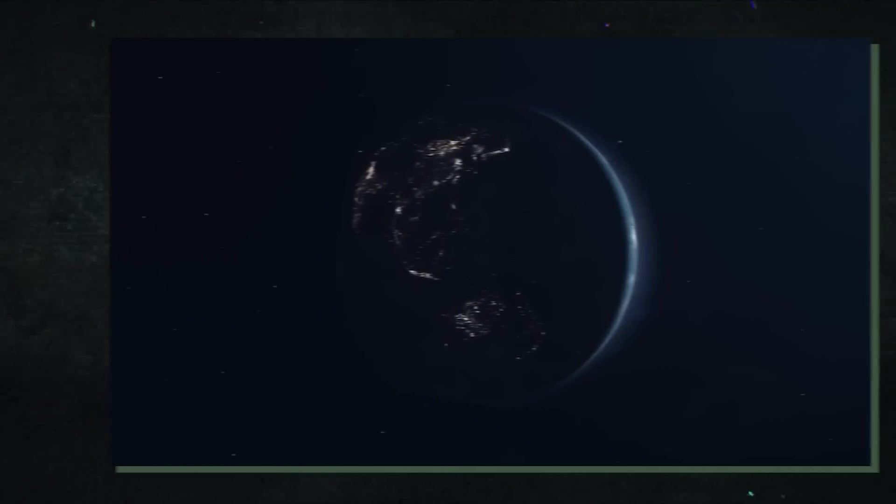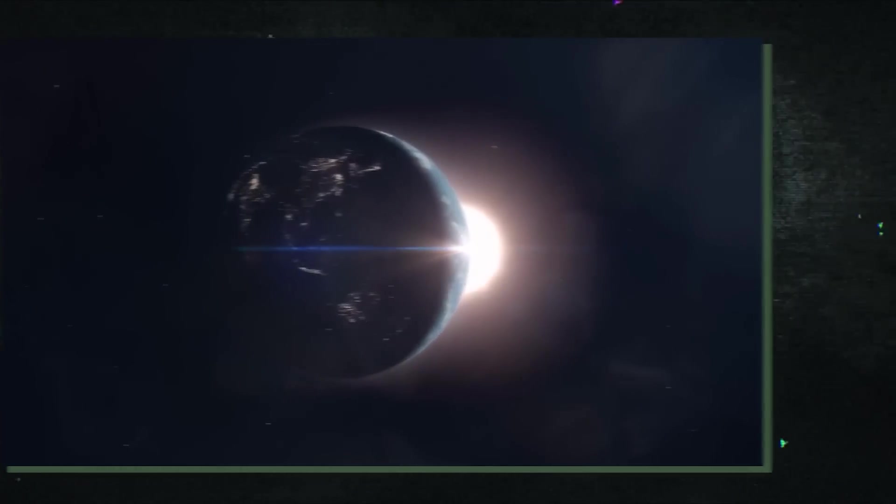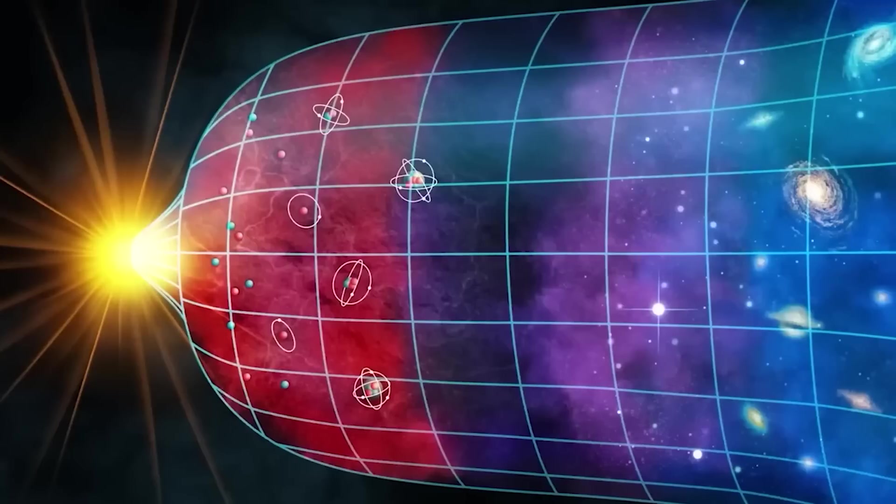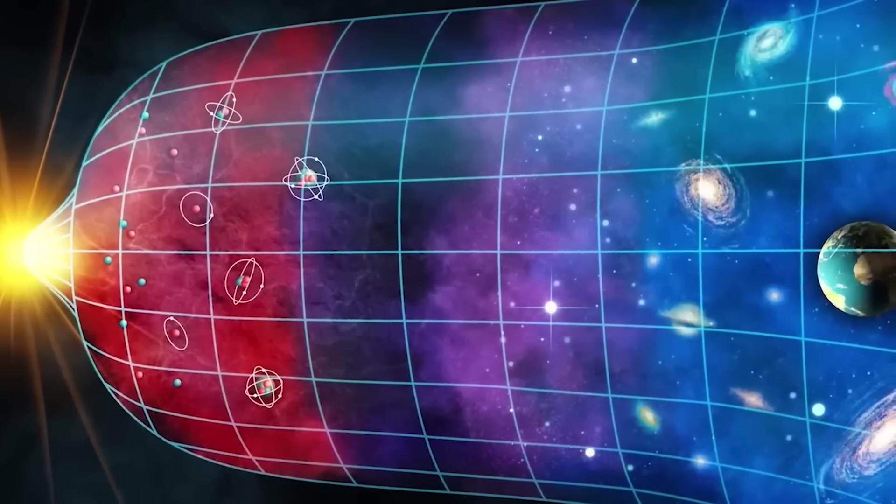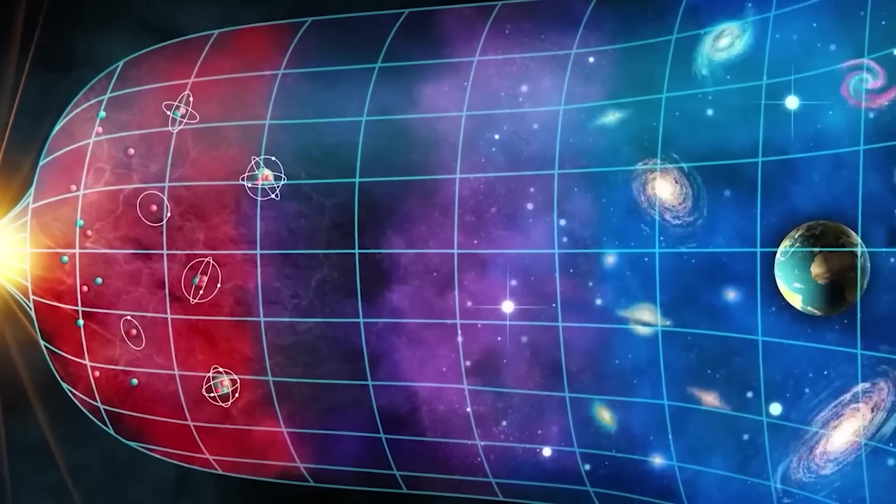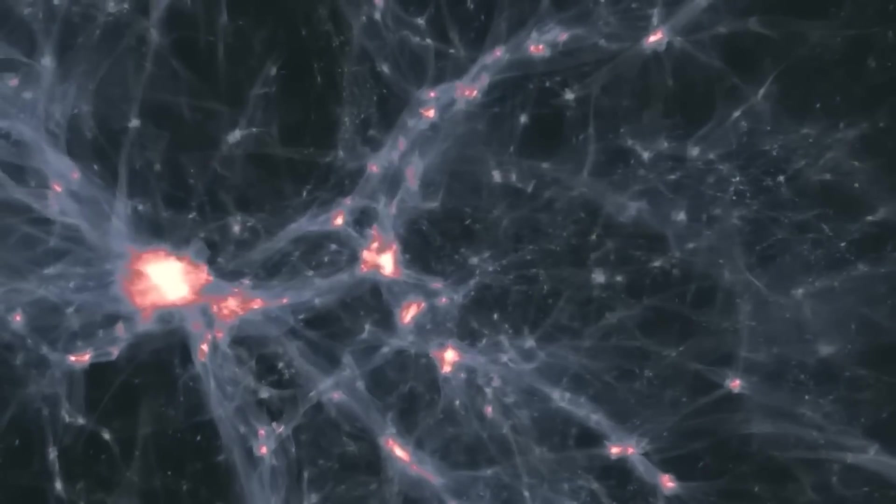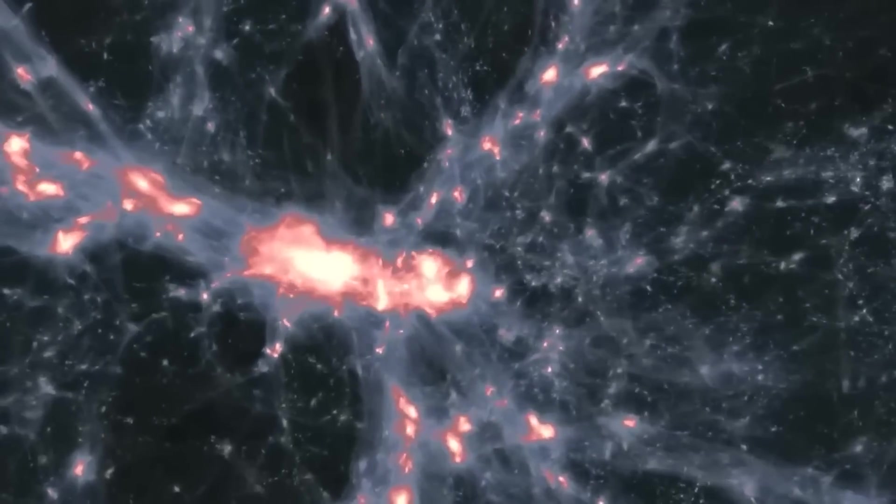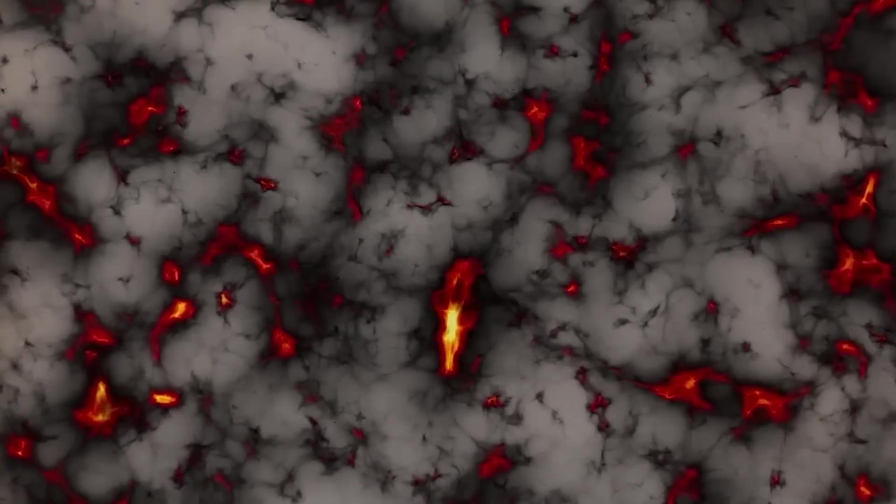What does this entail for how we perceive the universe, then? If our theory of gravity is flawed, it would indicate that our knowledge of how gravity functions is insufficient, and we would require a new theory to account for the occurrences that we experience in the cosmos. Given that dark matter is so important to our current understanding of galaxy formation and evolution, as well as the large-scale structure of the universe, this would represent a tremendous advancement in our knowledge of the cosmos.